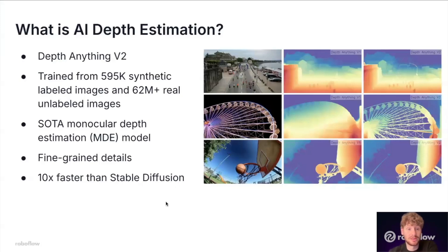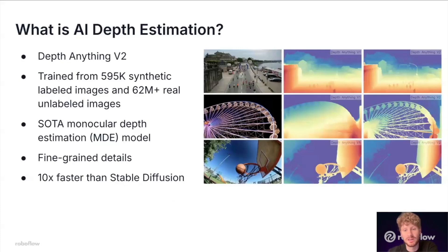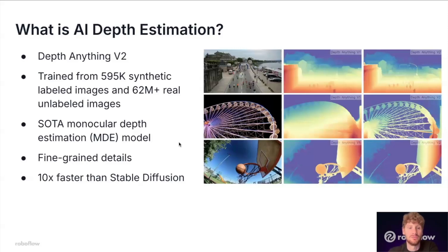Through RoboFlow, we're deploying Depth Anything V2. This is a state-of-the-art monocular depth estimation model. What this means is that all the model needs to see is an RGB image from any type of camera — it could be a machine vision camera, it could be your iPhone. It really just takes in one image and from that it can produce a depth map, giving us that fourth dimension — the depth dimension — that really takes these images and translates them into a way that we humans can perceive, so that we can get richer information.